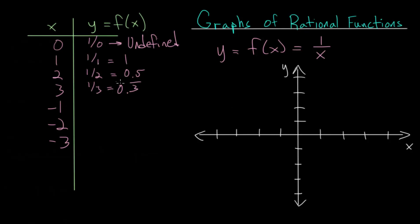Plugging in the negative numbers, we get 1 over minus 1, which is just minus 1. When we plug in negative 2, we get minus a half. And at negative 3, we get minus one third.